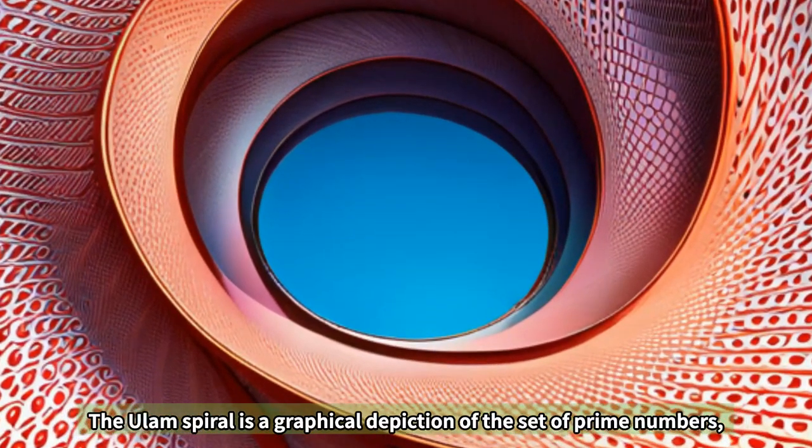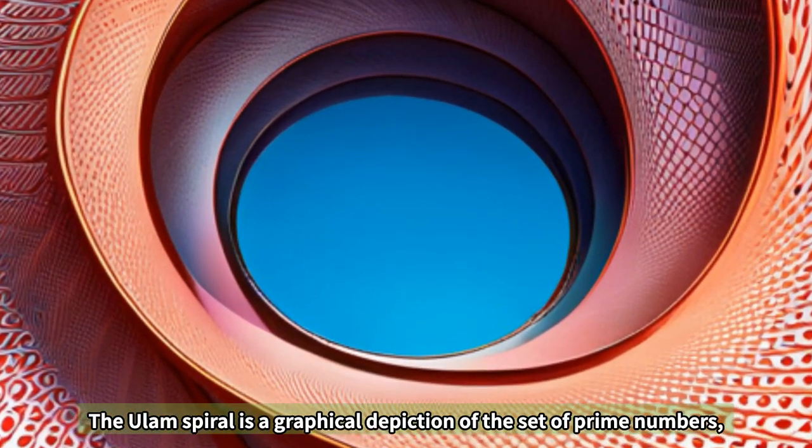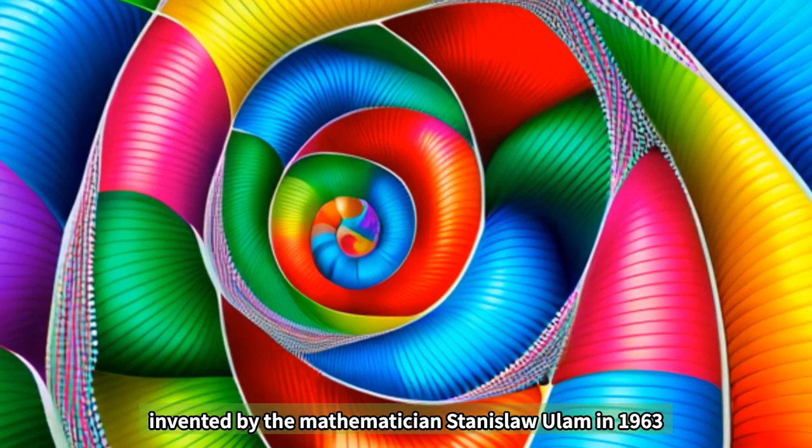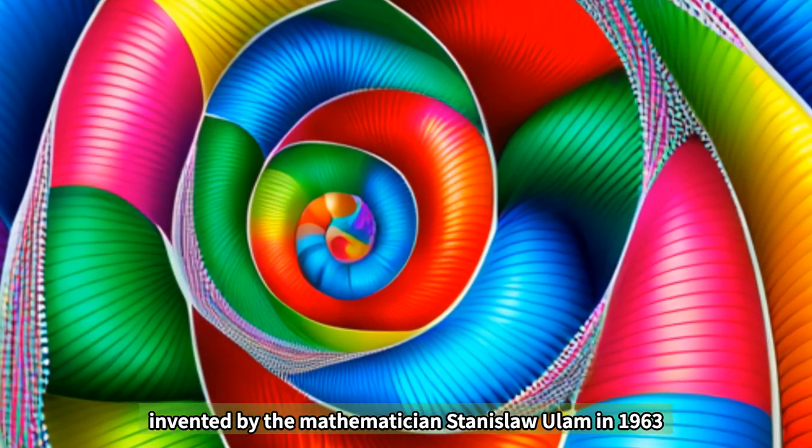The Ulam spiral is a graphical depiction of the set of prime numbers invented by the mathematician Stanislaw Ulam in 1963.